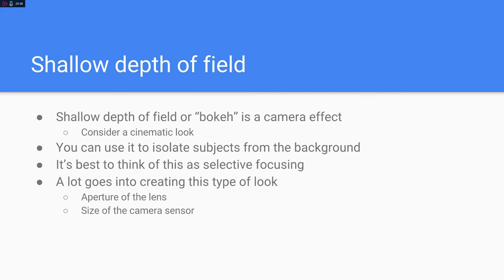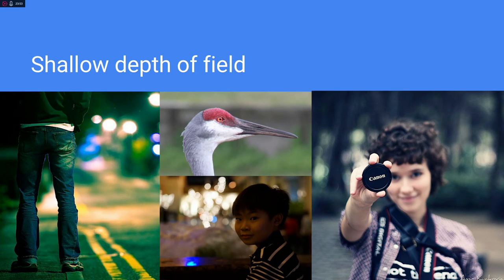Shallow depth of field is a camera effect considered cinematic — you can use it to isolate subjects from the background. A lot goes into creating this look, like the aperture of the lens and the size of the camera sensor. On our phones, the aperture can't shrink down the way it can on a DSLR, and a DSLR or broadcast camera would have a much larger sensor than an iPhone or Android. Examples shown include a gentleman's legs in focus with a blurred street, and a girl where her face is blurred while the Canon lens she's holding is the sharp subject.